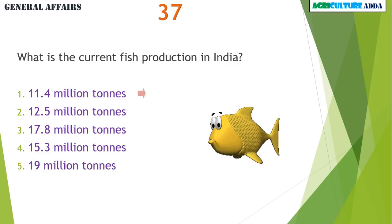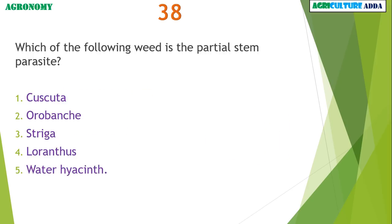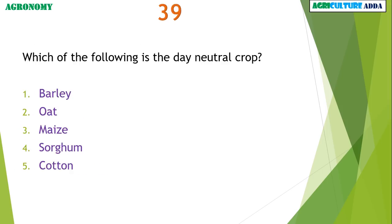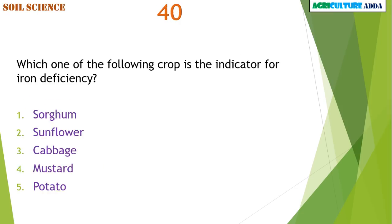What is the current fish production in India? 11.4 million tons. Which of the following weed is a partial stem parasite? Loranthus. Which of the following is a day-neutral crop? Cotton.